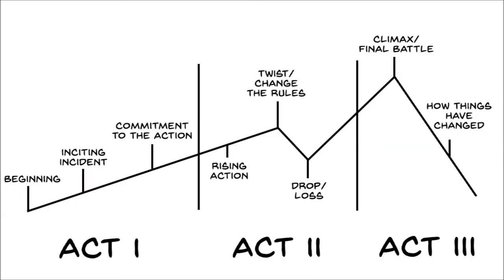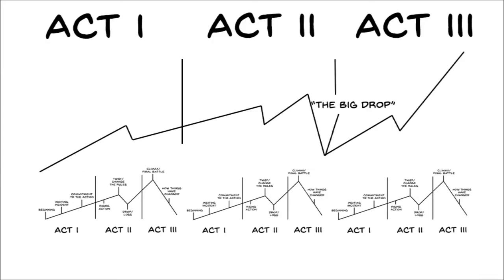When we're discussing the end of a story, it doesn't start with when you type THE END — it starts at the beginning of Act 3. In the classic 3-act structure, this begins at the drop of the story, when our protagonist has reached their lowest point. So we have to set the stage for the final curtain. Here's how that structure looks in a multi-volume or serial story.